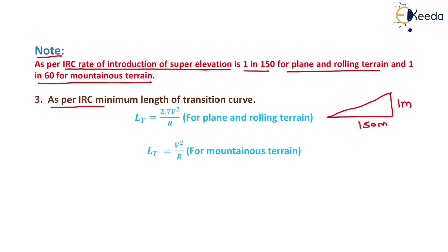The third criterion per IRC gives the minimum length of transition curve as LT = 2.7V²/R for plain and rolling terrain and LT = V²/R for mountainous terrain. We have now calculated the length of transition curve as per all three criteria — that is all about transition curves. Thank you, students.